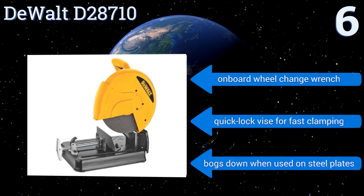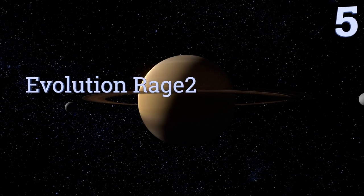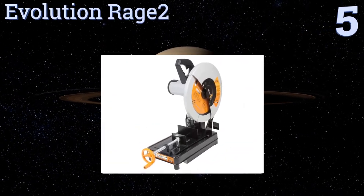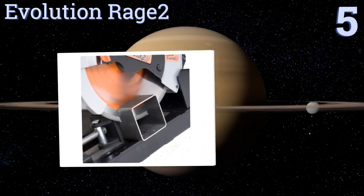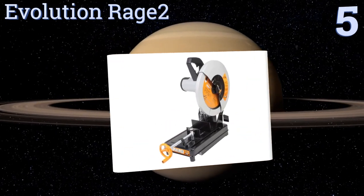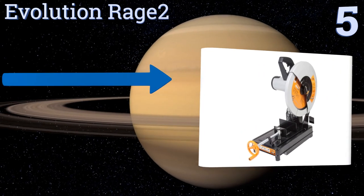It features an onboard wheel change wrench and a quick-lock vise for fast clamping, however it bogs down when used on steel plates. Moving up our list to number five, the Evolution Rage 2 is a great multi-purpose tool that can slice steel, aluminum, plastic, and wood without changing blades.